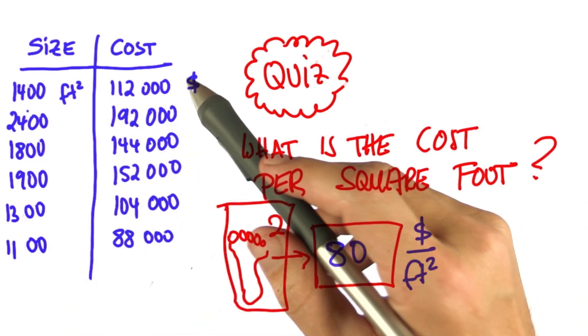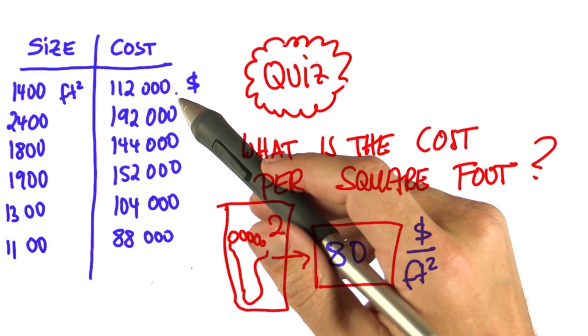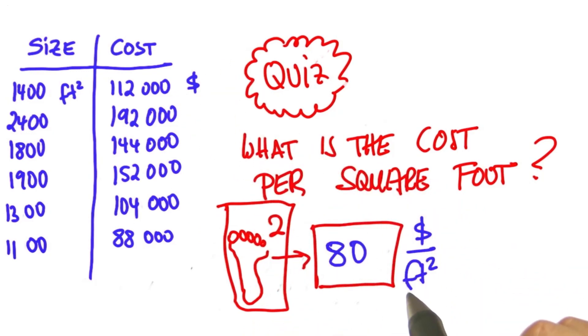It turns out this data set has this amazing property that the cost per square foot is constant, and that allowed us to interpolate the way we just did.